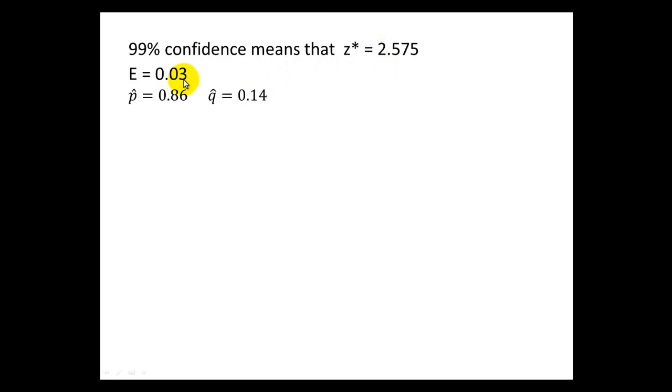They mentioned that they wanted their margin of error to be 3 percentage points, thus E will equal 0.03. And finally, we're assuming that we can use a prior study that found out that 86% of homes had a vehicle, so we'll let p hat equal 0.86 and q hat, the complement, 0.14.